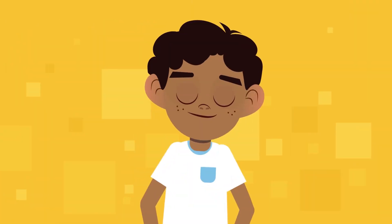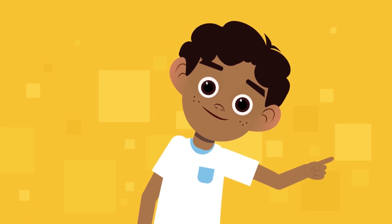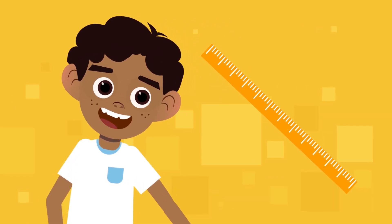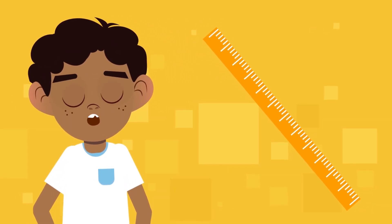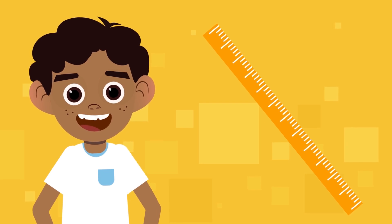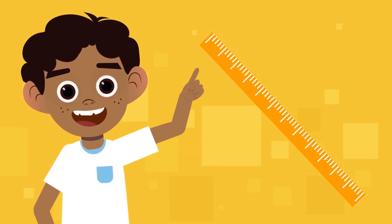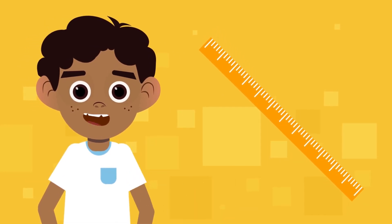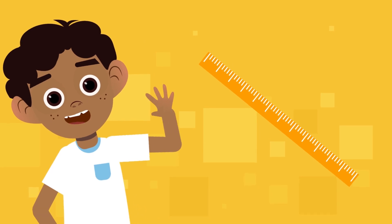Do you want to try an example? Find a meter stick and calculate the area of the next rectangular object you find. Remember that you only have to multiply the length by the width. See you soon!